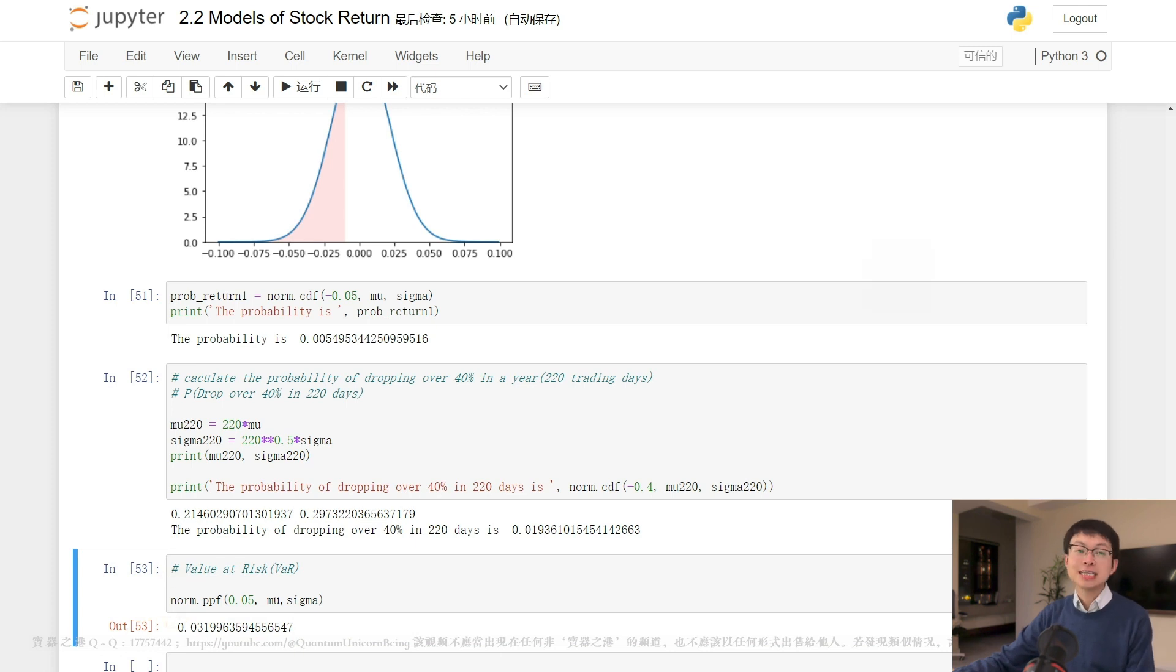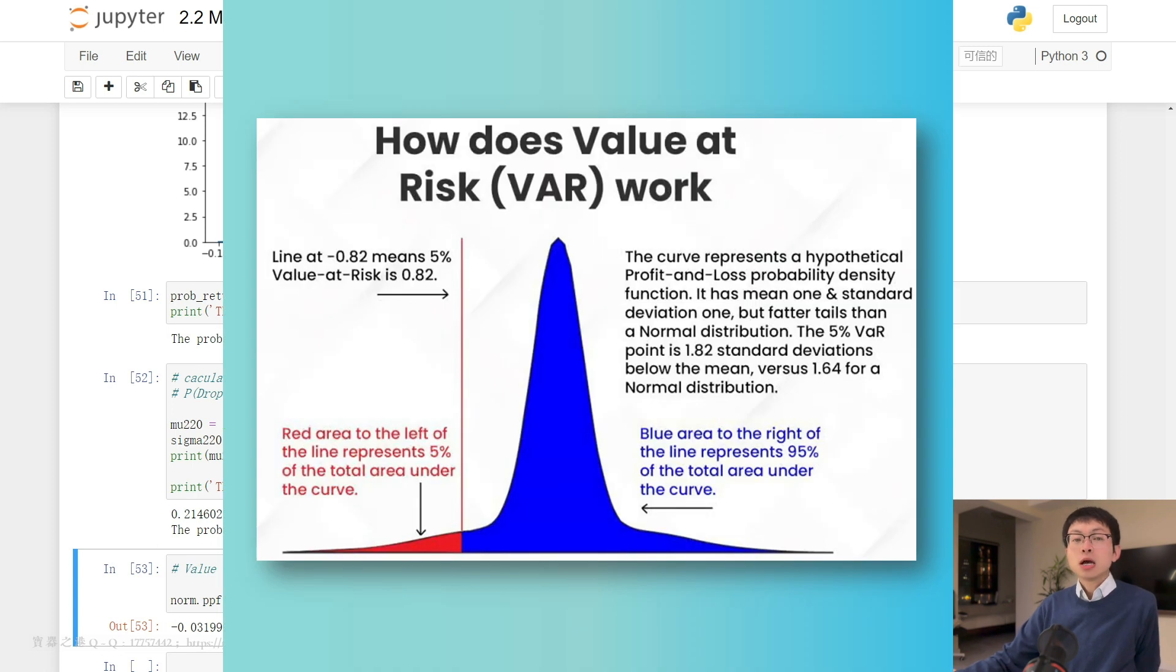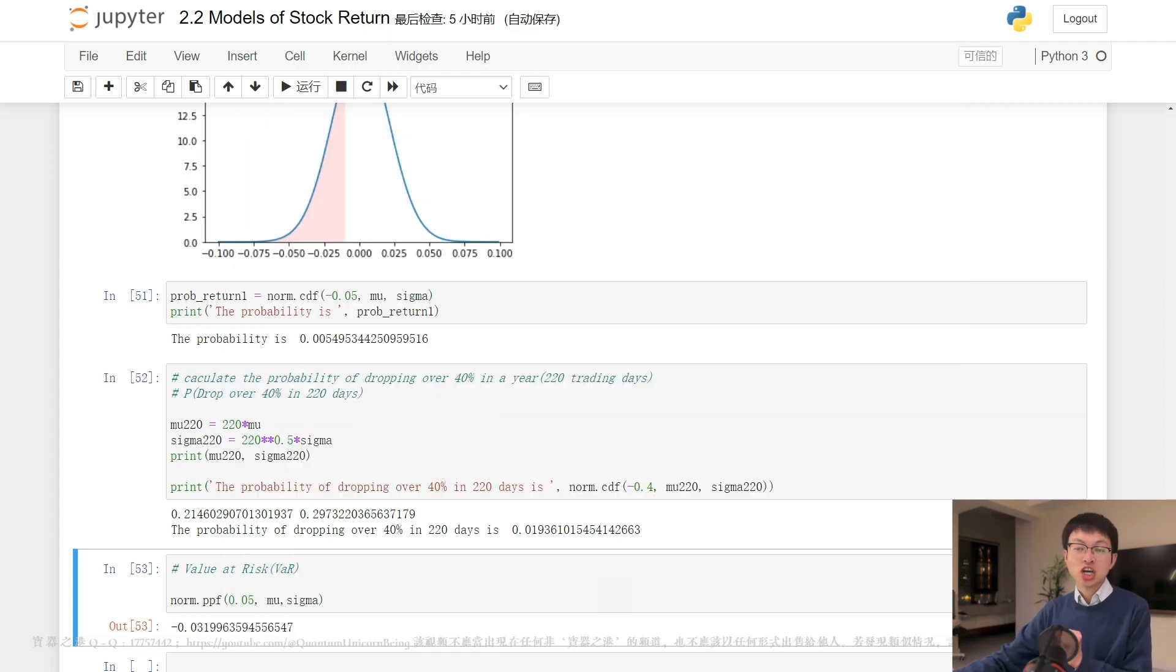VAR is calculated using a variety of statistical techniques, such as historical simulation, parametric modeling, and Monte Carlo simulation. It is an important tool for risk management, because it allows investors to quantify their exposure to potential losses and adjust their investment strategies accordingly.